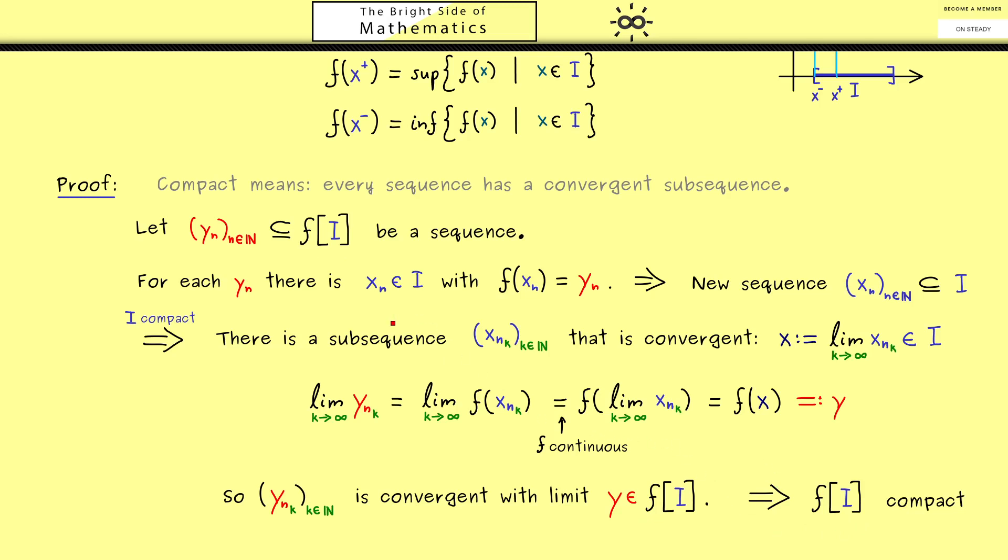So please remember this important result here. Images of compact sets are also compact if we consider a continuous function. And an important implication from this is that a continuous function defined on a compact set always attains its maximum and its minimum. In fact we will often use this property later. With this I hope I see you in the next video. Bye.